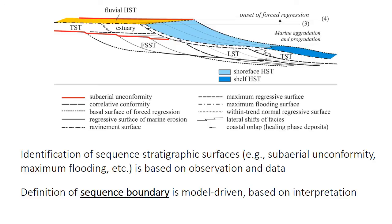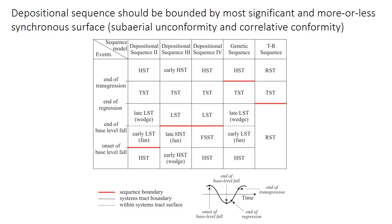So it's really irrelevant what you choose as your sequence boundary. This table summarizes five different models that have been proposed for sequence stratigraphy, how they label the systems tracks, where they place the sequence boundary, and so forth. The details of these are not important because they're just models — just different ways of describing or summarizing what we can objectively recognize from the patterns of base level change and the surfaces that arise from that.